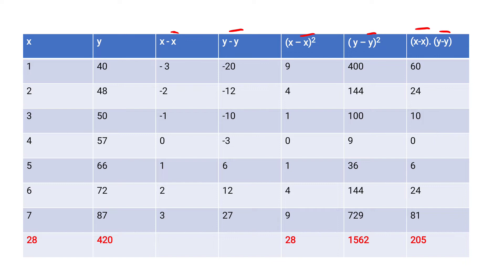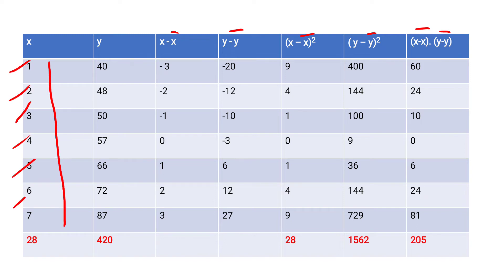For x, write all the values given in hours of study: 1, 2, 3, 4, 5, 6, 7. For y, write all the values given in marks obtained: 40, 48, 50, 57, 66, 72, 87. Then find x̄ by adding all the x values and dividing by n. They have given 7 values, so n = 7.